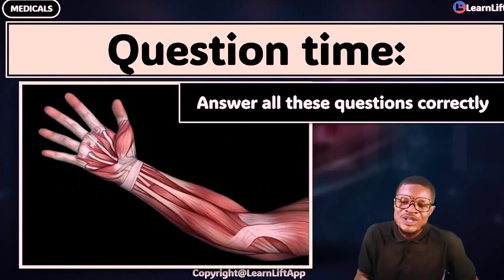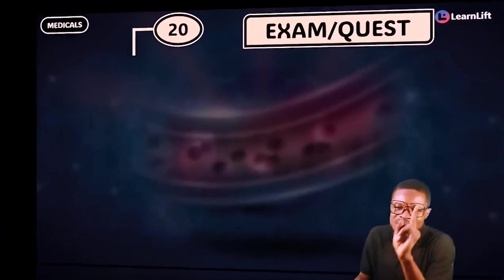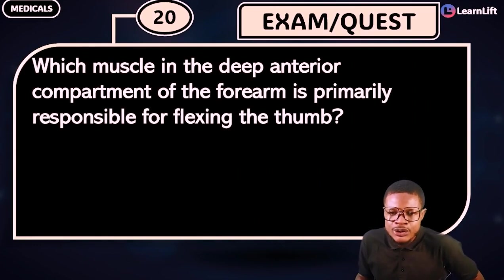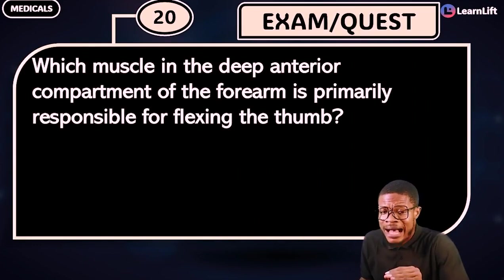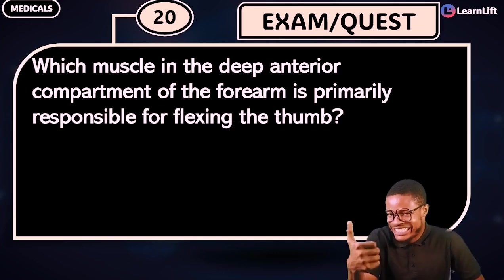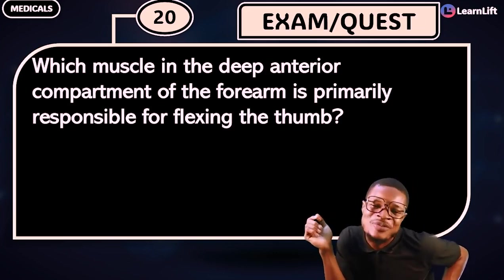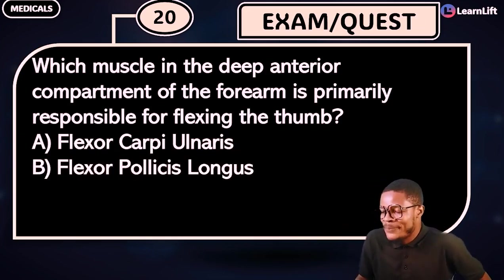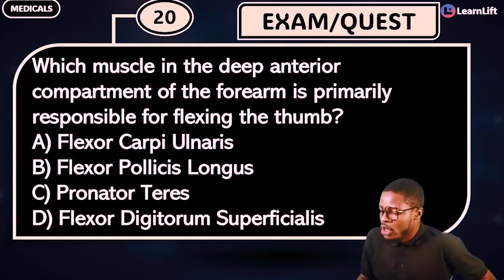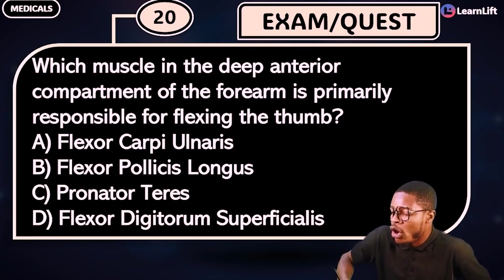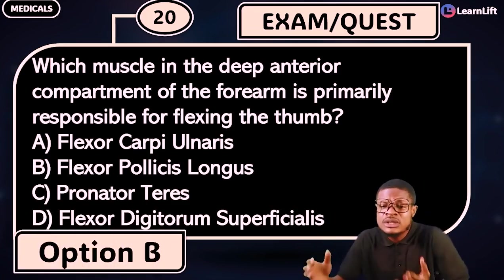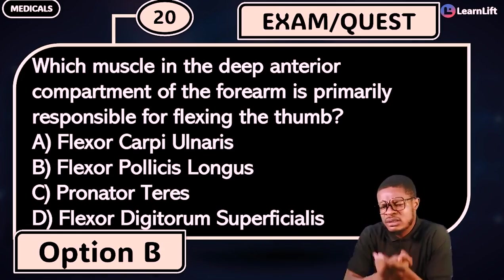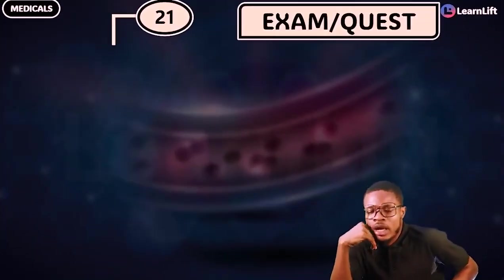Let's answer some questions. Question 20: Which muscle in the deep anterior compartment of the forearm is responsible for flexing the thumb? The options are: A) flexor carpi radialis, B) flexor pollicis longus, C) pronator teres, D) flexor digitorum superficialis. The answer is option B — flexor pollicis longus. See, anatomy is not difficult; it's very simple, easy, and direct.